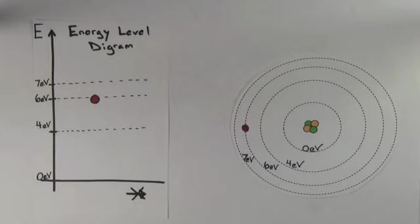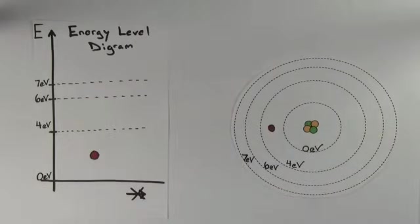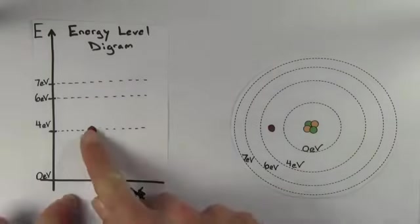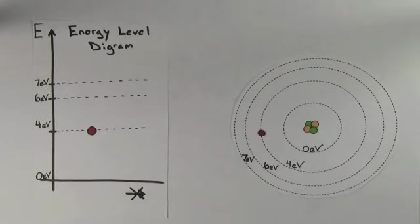Note that the electron for our hypothetical atom here can only exist with 0 eV, 4, 6, or 7 eV. The electron just cannot exist between energy levels; it's always got to be right on one of the energy levels.